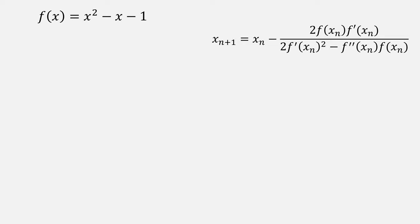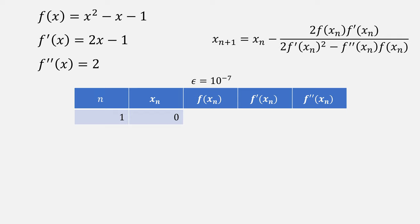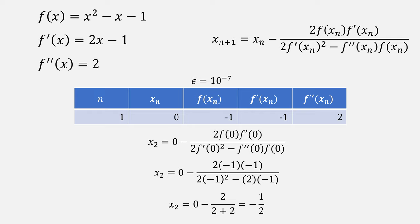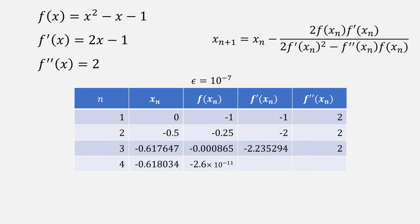Let's look at an example of x² - x - 1 using Halley's method. We'll need the derivative and the second derivative with an end condition of 10⁻⁷. If we start from the value of 0, we do three function evaluations, then plug them into Halley's method to give us our next value for x. In this case, negative half.